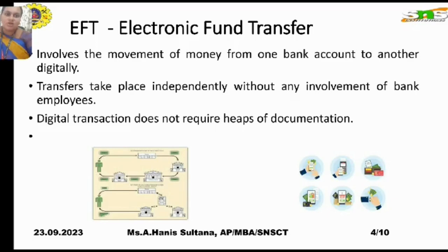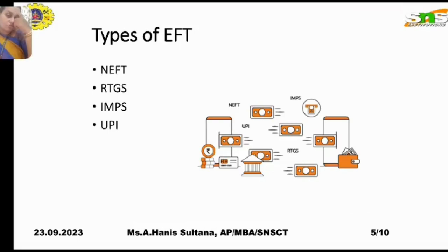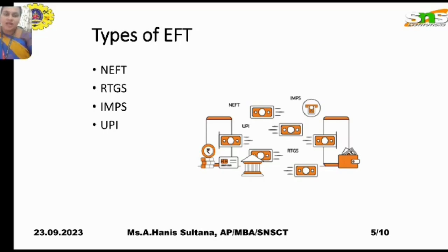Digital transactions do not require heaps of documentation — things like checks, slips, or pay slips are not involved in Electronic Fund Transfer. The types of EFT we have are: NEFT, RTGS, IMPS, and UPI. UPI is the Unified Payment Interface, and IMPS is the Immediate Mobile Payment Service. Today's class will cover NEFT and RTGS.